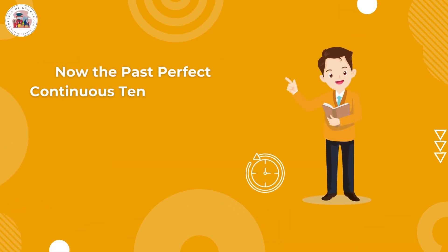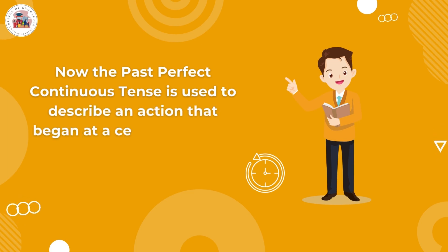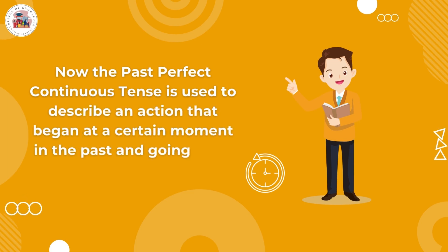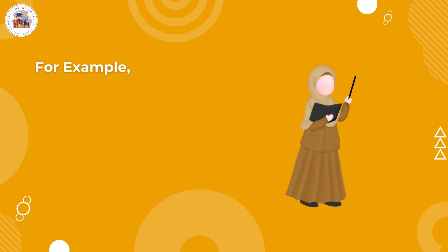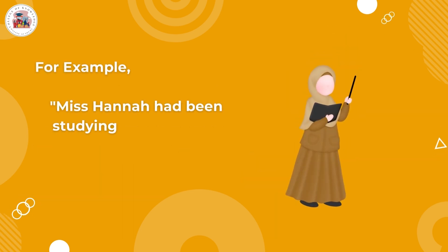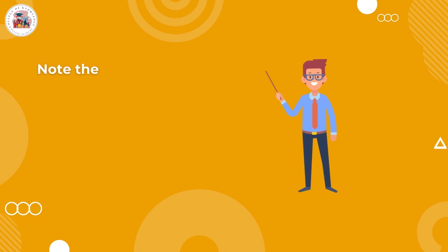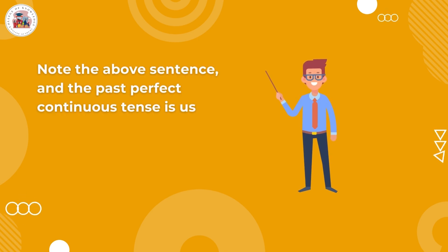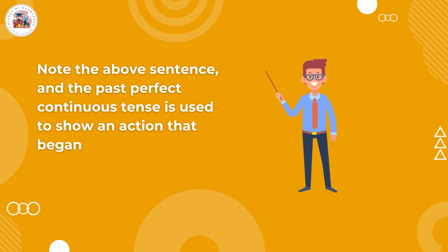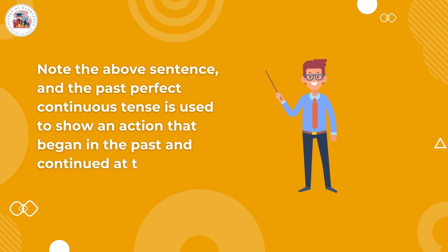The past perfect continuous tense is used to describe an action that began at a certain moment in the past and was going on at that time. For example, Miss Hannah had been studying there for five years when Ali came to the school. Note the above sentence. The past perfect continuous tense is used to show an action that began in the past and continued at that time.